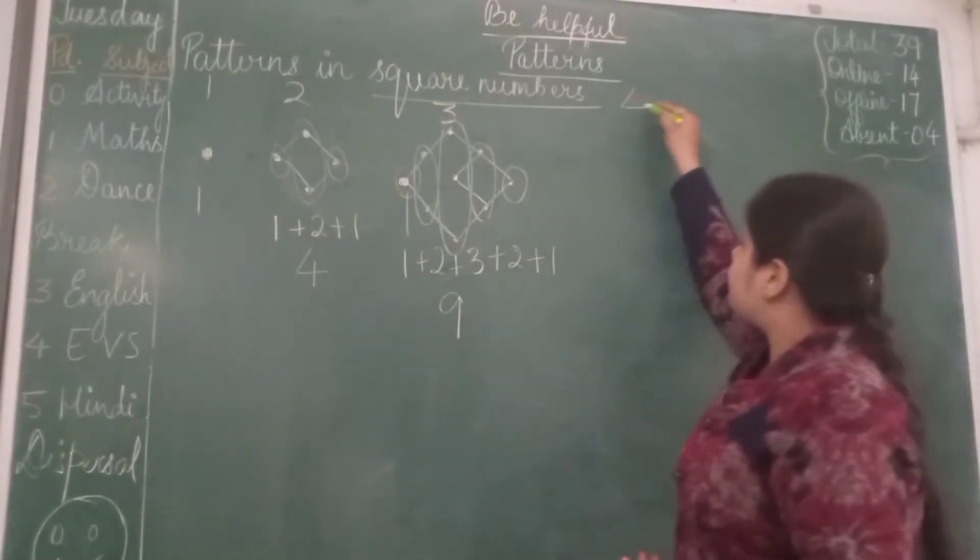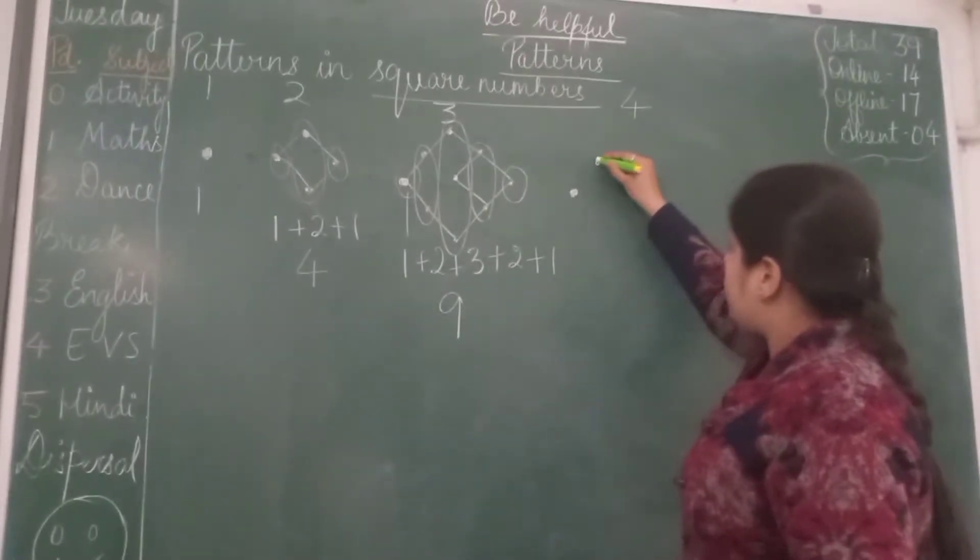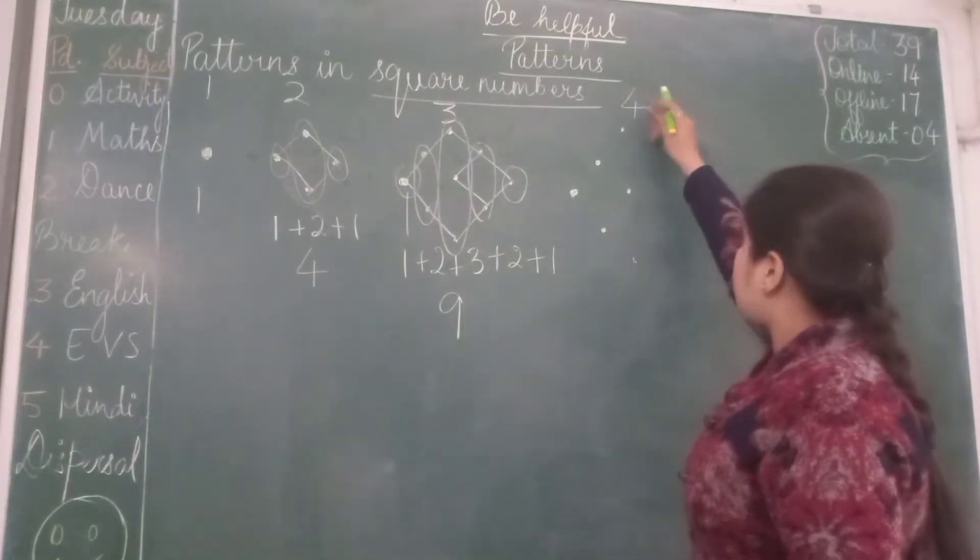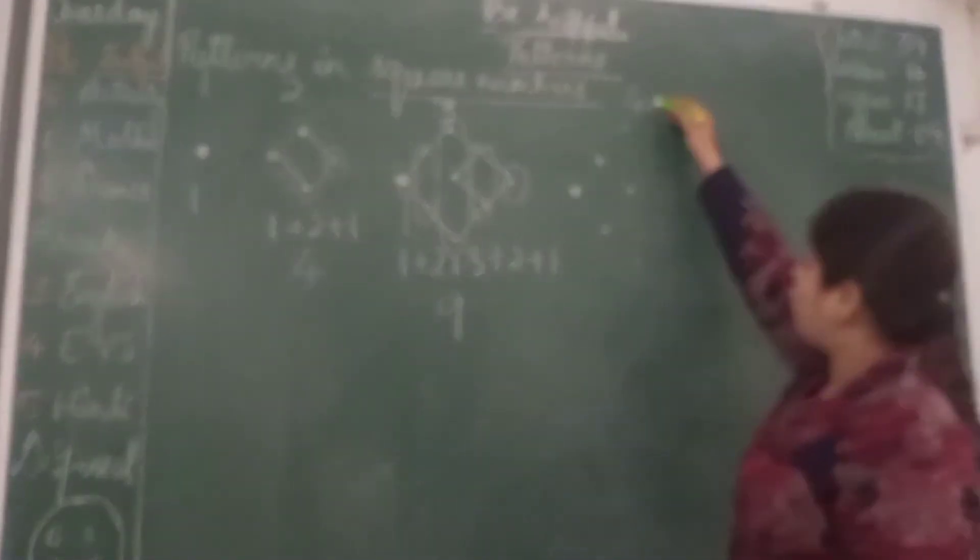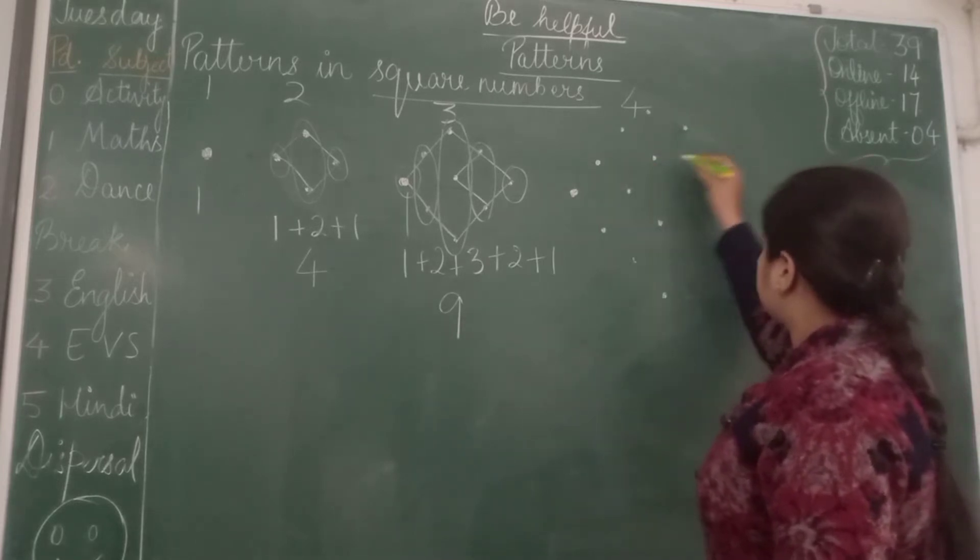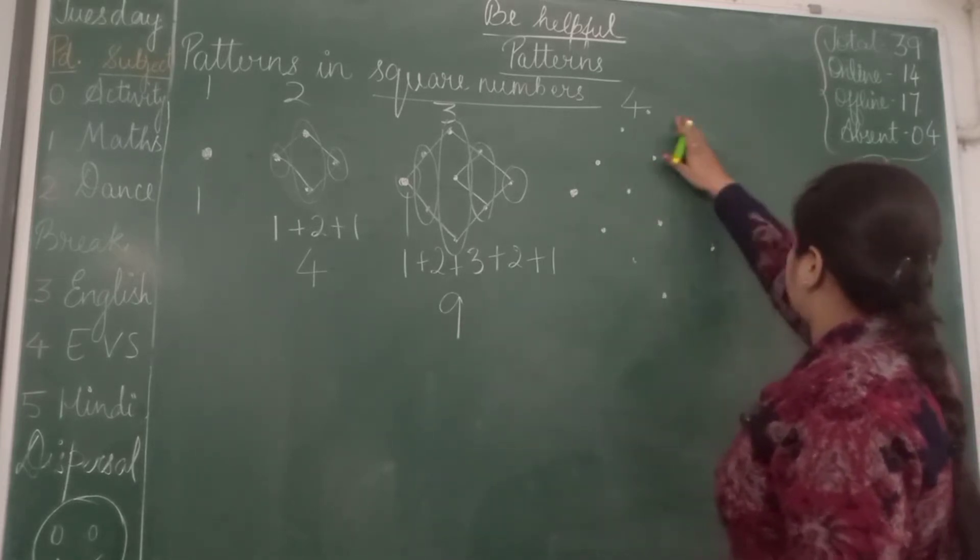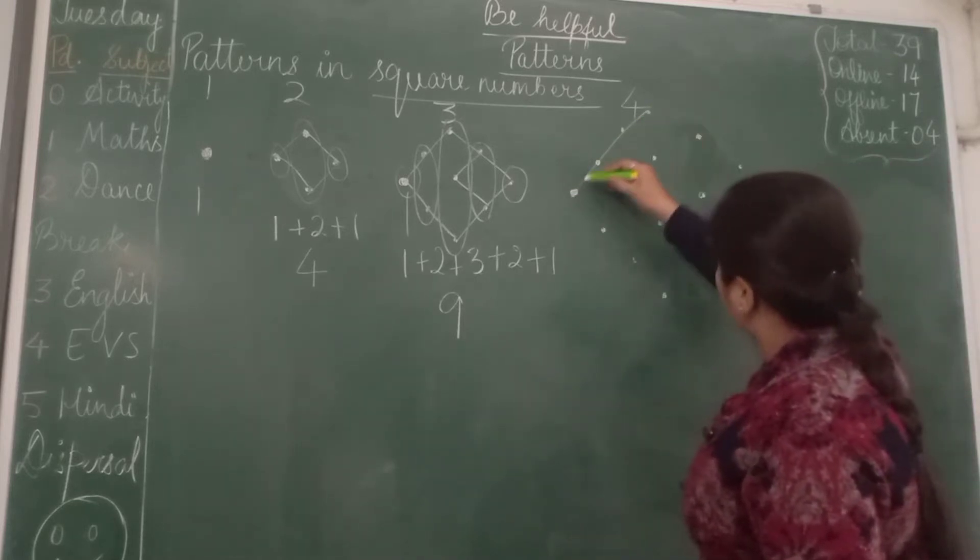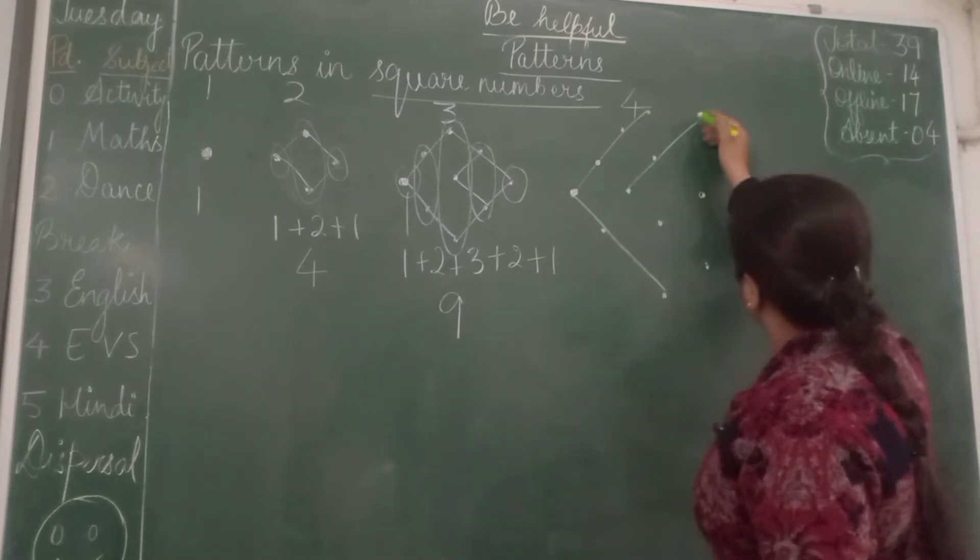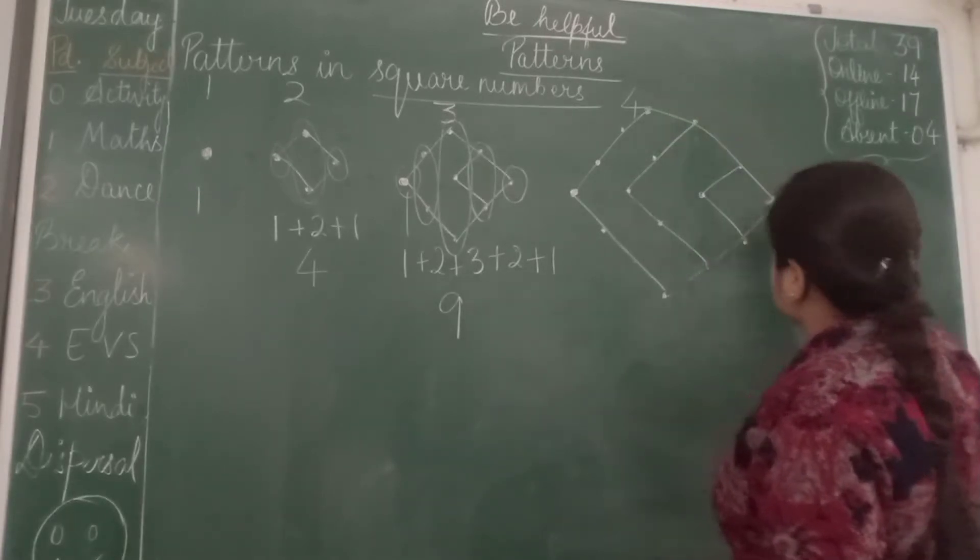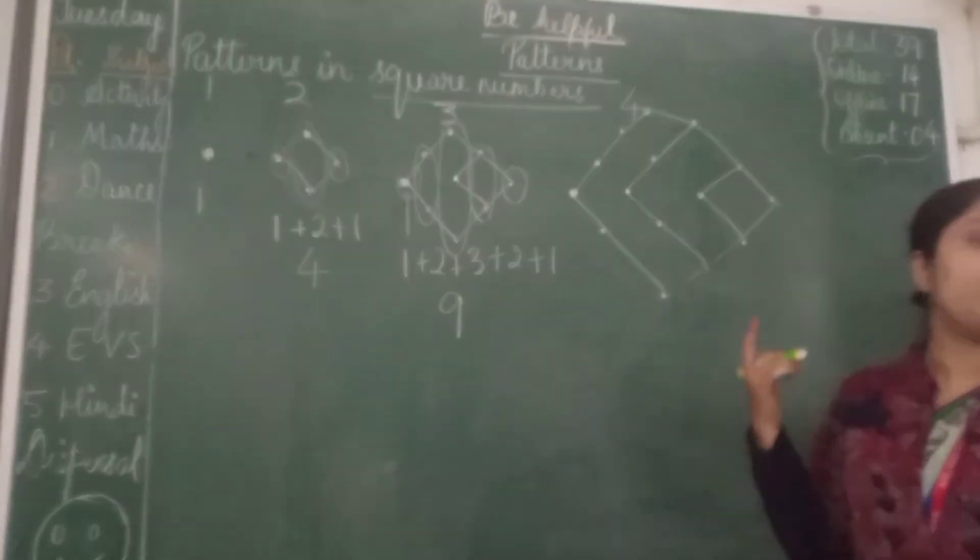Now let's check it for 4. Again 1 dot, then 2 dots, then 3 dots, then 4 dots - this is the middle row. So 1, 2, 3 and 4. Then in decreasing order: 3, 2, and 1. The easy way to remember this diagram - in how many ways we can remember this diagram? Then in here it is 1.